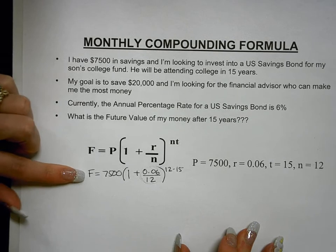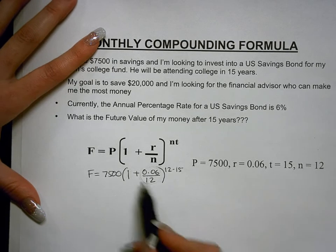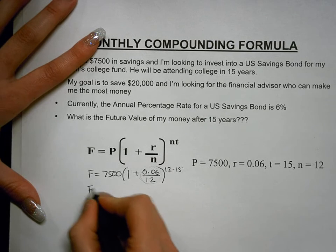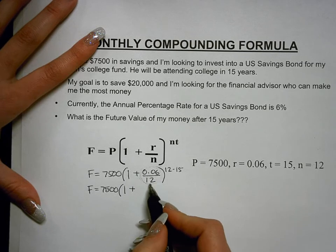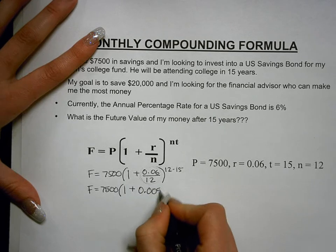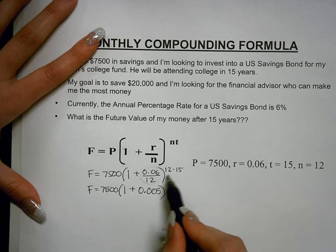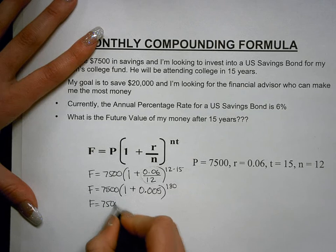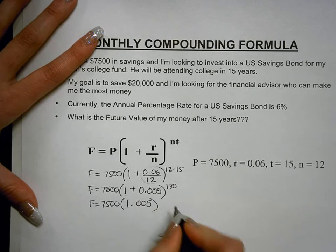Now we follow the order of operations. We do the parentheses first, and inside the parentheses we have addition and division, so we do the division first. 0.06 divided by 12 equals 0.005. The exponent 12 times 15 equals 180. So now we rewrite: F equals 7,500 multiplied by the quantity 1 plus 0.005, which is 1.005, raised to the 180th power.